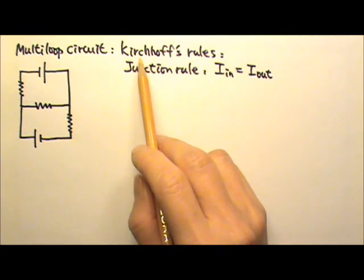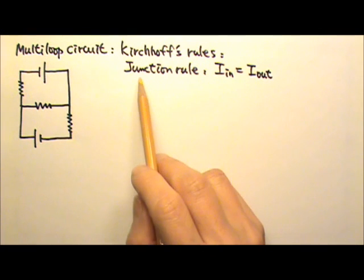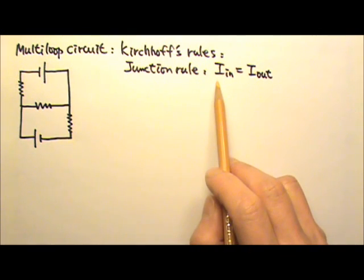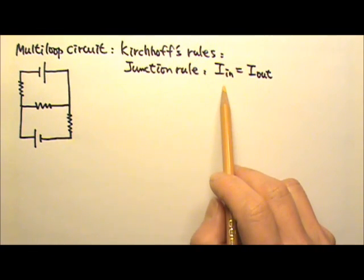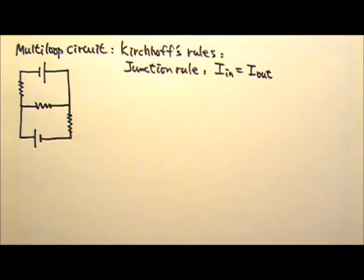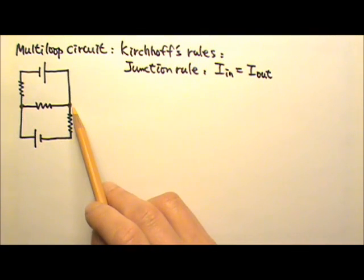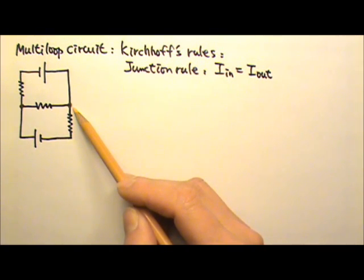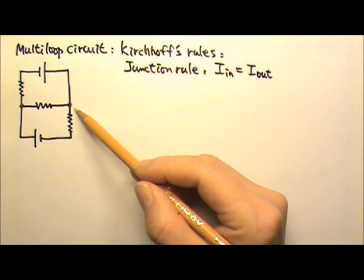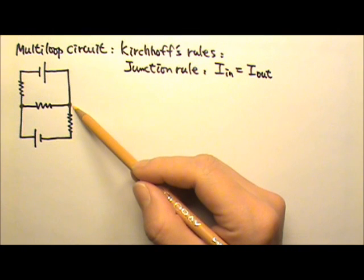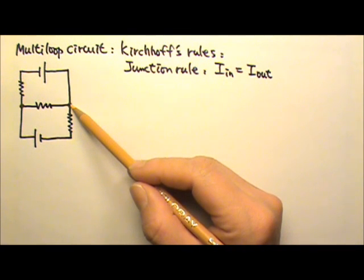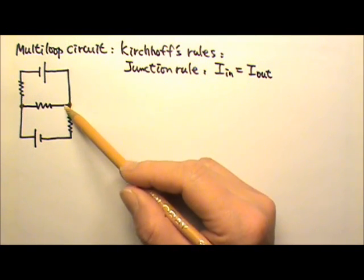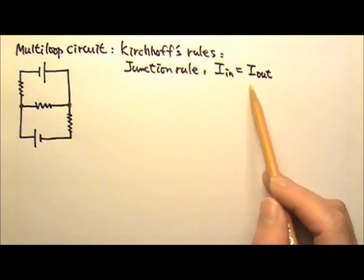For this kind of circuit, we shall find Kirchhoff's rules useful. The first of Kirchhoff's rules is the junction rule. The junction rule says that at any junction point, the current going into the junction equals the current coming out of the junction. If three amps of current goes into a junction, we must have three amps coming out. We cannot have only two amps coming out, otherwise charges will be accumulating at the junction. And we cannot have four amps coming out either, otherwise we would have charge depletion at the junction point. So the current going in must equal the current coming out.